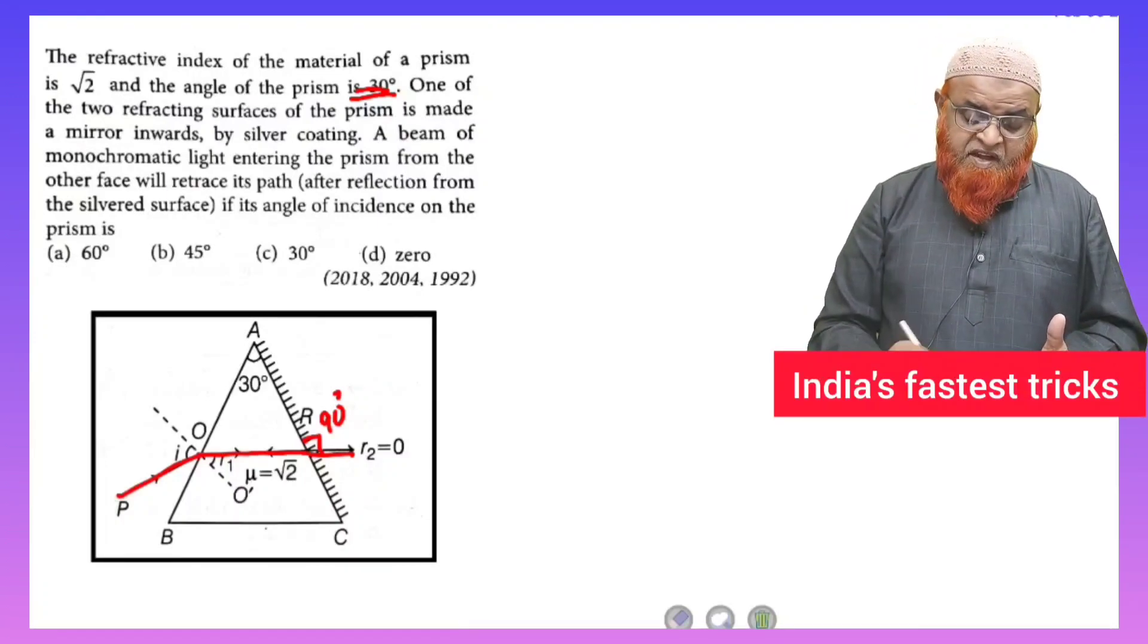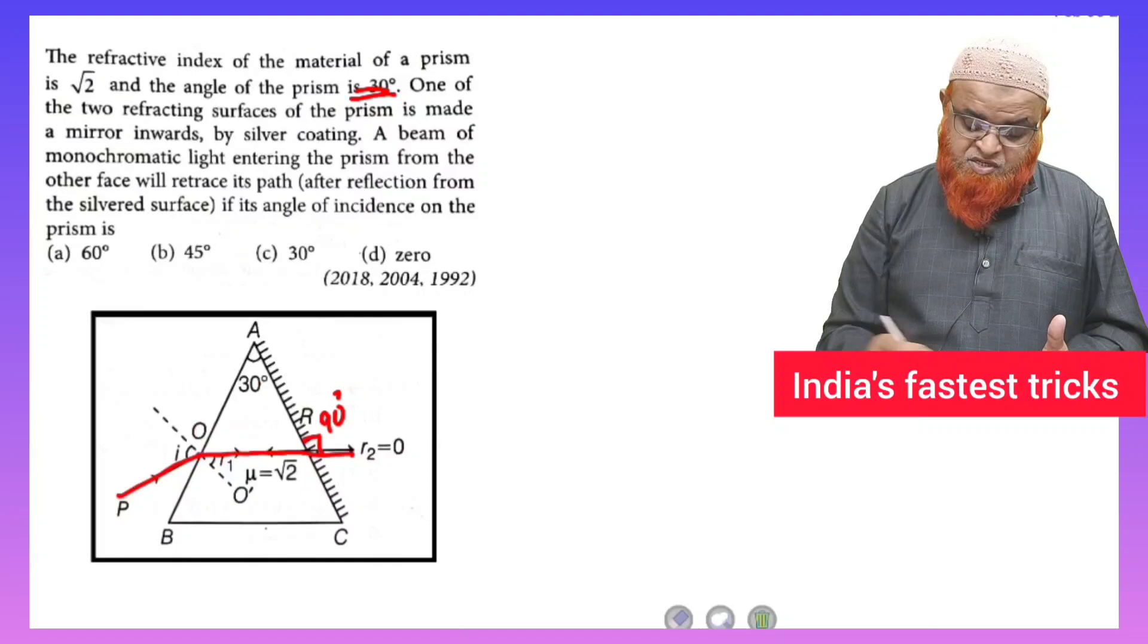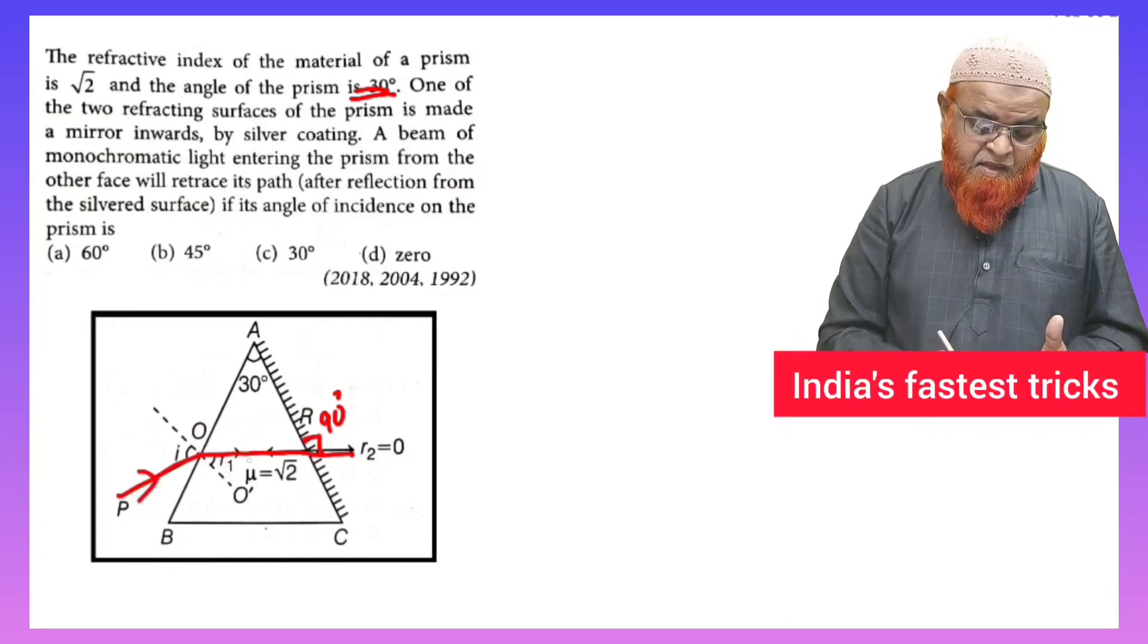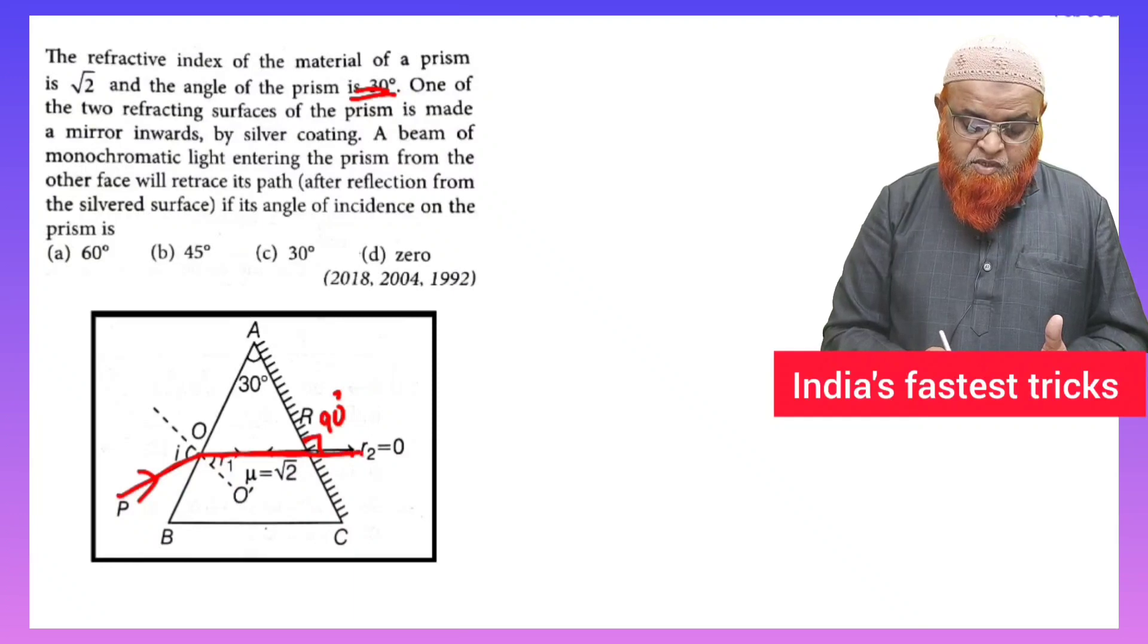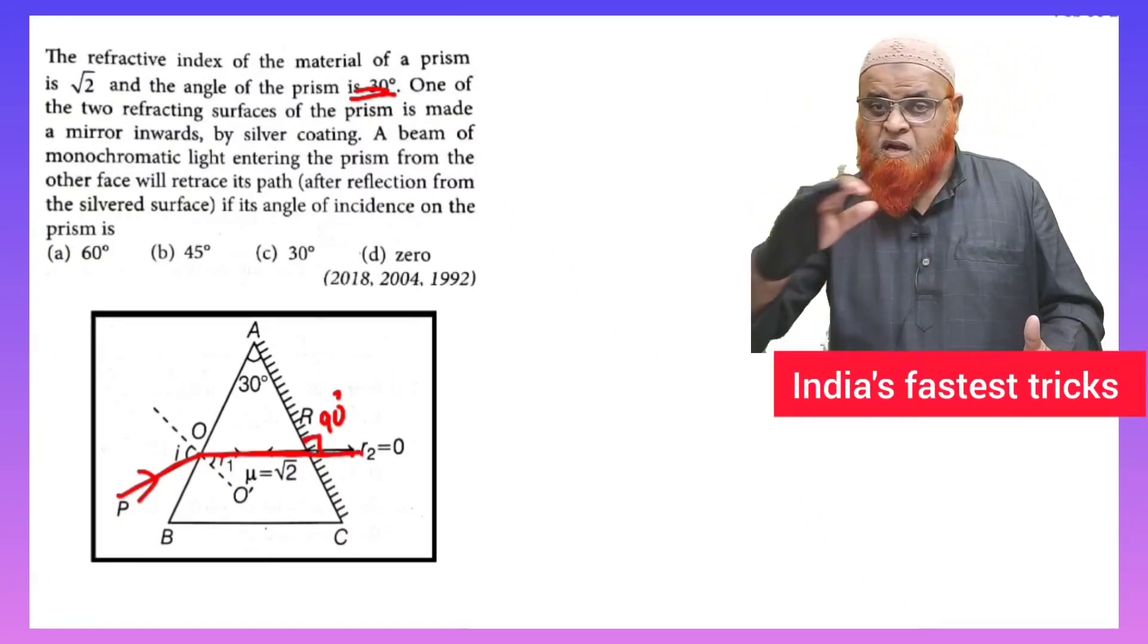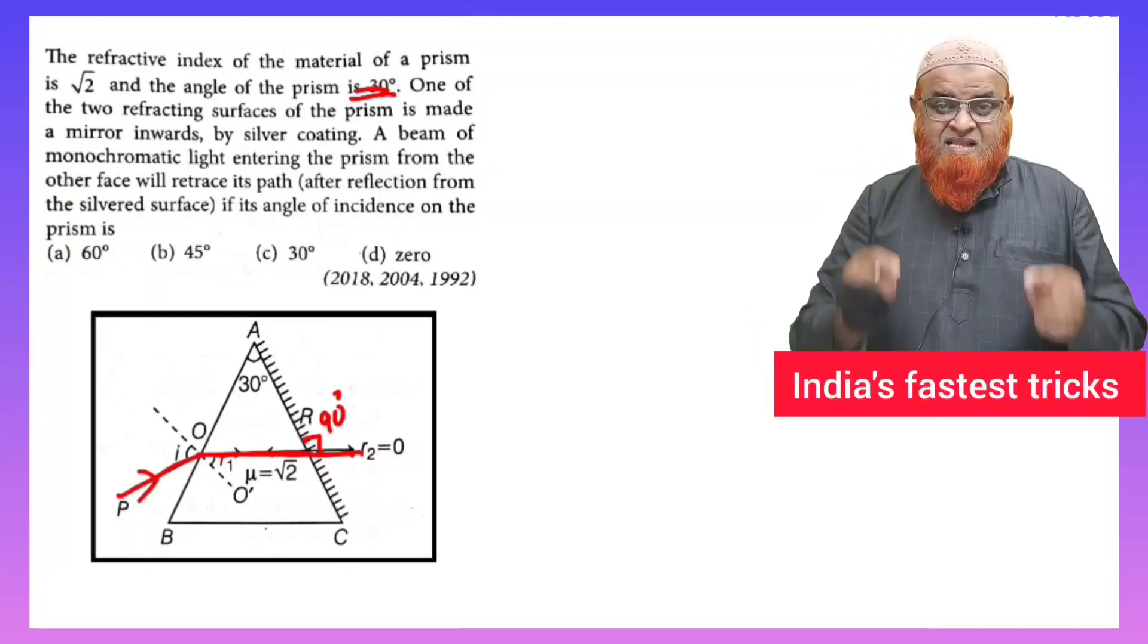Whenever the light ray enters in this direction and it comes out perpendicularly to the other side of the prism, perpendicular to the other side of the prism, then you can convert Snell's law by using this direct formula.